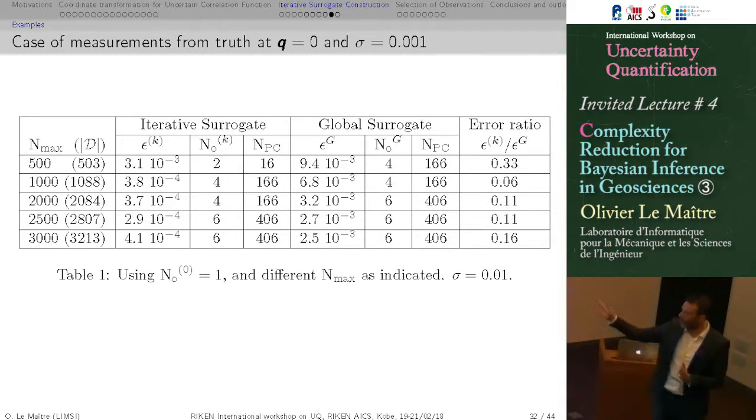This is the dimension of the polynomial basis. So at the end, we evaluate 400 polynomial coefficients. And this is a comparison with the case of a global surrogate construction, trying to make the computational cost comparable. So this is actually the number of model evaluations that is needed for the global surrogate construction. And here, you have the ratio of the error. So for the surrogate, basically here, on that case, we save, well, for the same computational cost, we have an accuracy that is ten times better.